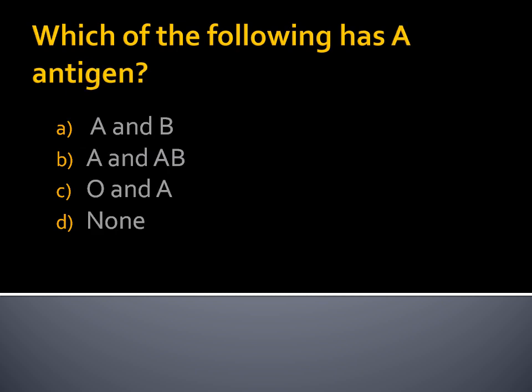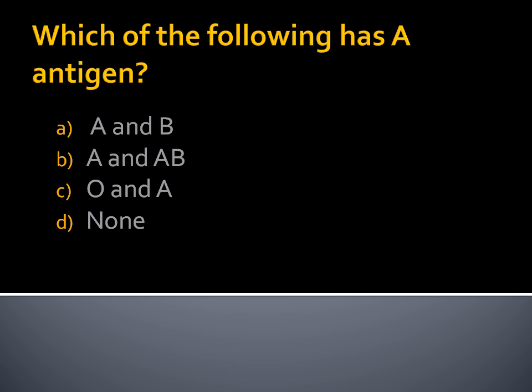Which of the following has A antigen? Option A, A and B. Option B, A and AB. Option C, O and A. Option D, None. To answer these questions, you need to watch the blood part 2 video where I explained using a table which antigen and antibody each group has. The answer is Option B, A and AB. Blood groups A and AB have antigen A.